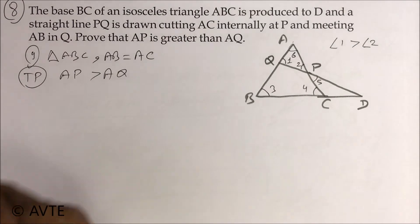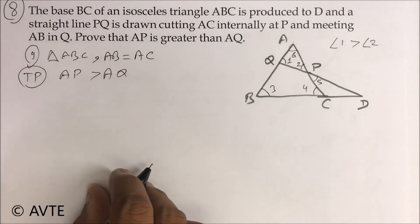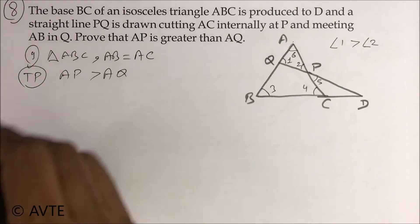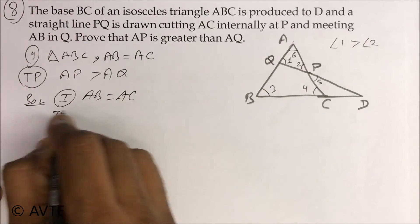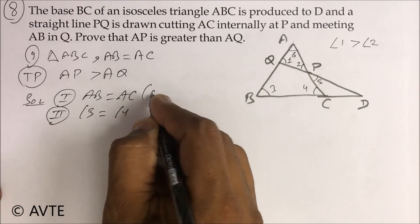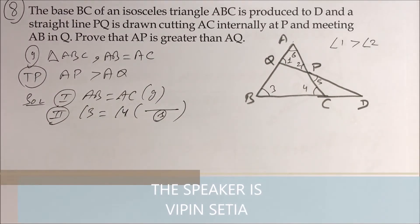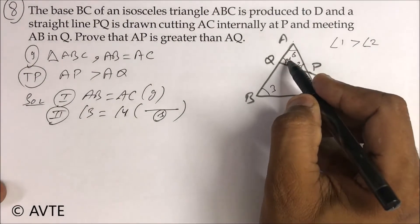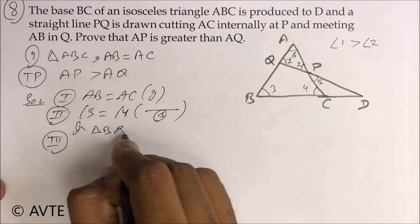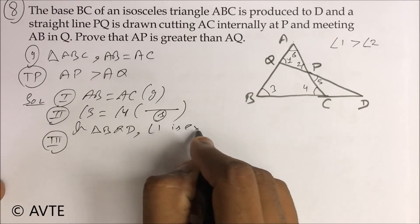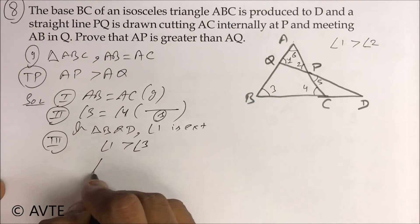We have marked six angles, so I will give you the solution in an elaborate format. First, AB is equal to AC, which means angle three is equal to angle four — this is given. The statement is: if two sides are equal then the opposite angles are also equal. Now, angle one is greater than angle three because in triangle BQD, angle one is an exterior angle, so angle one is greater than angle three. And since angle three equals angle four, angle one is greater than angle four.